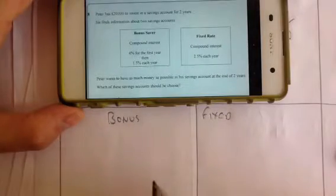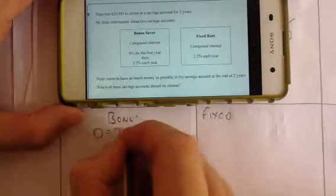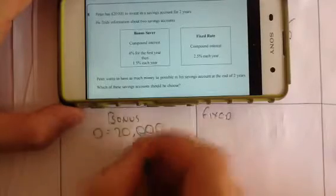Now you can do compound interest with multipliers, but I like to just do it one year at a time. So year 0, which is the original, he's got £20,000.